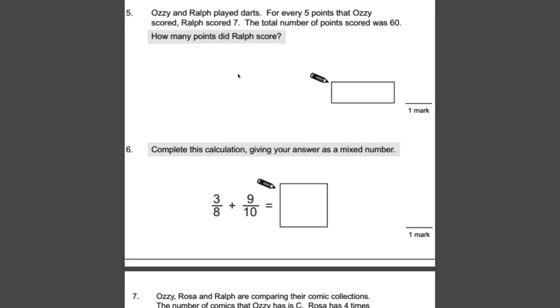Ozzie and Ralph played darts. For every five points that Ozzie scored, Ralph scored seven. The total number of points scored was 60. So how many points did Ralph score? So there are a couple of ways of doing this. Some people like to visualize it, and they would write it out. So you could say, okay, well, Ozzie's got five points, and then Ralph scored seven, and they keep going. And you can keep adding them up until you get to 60.